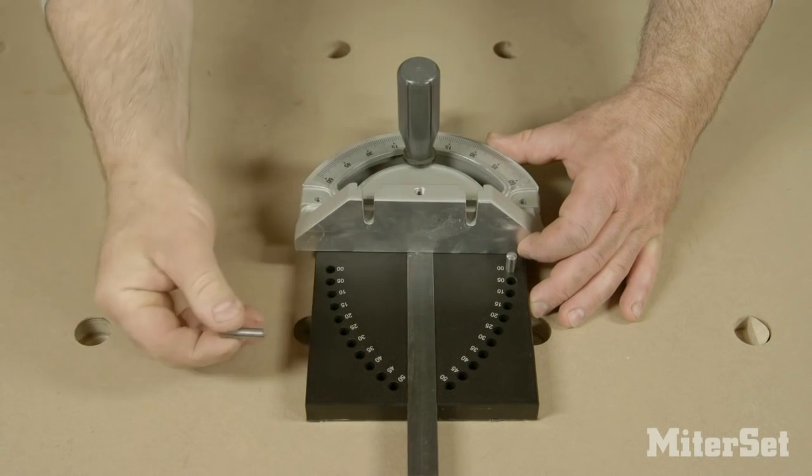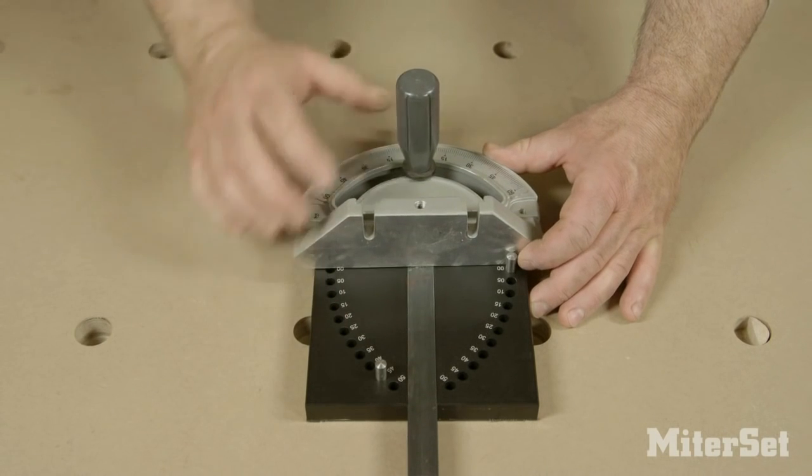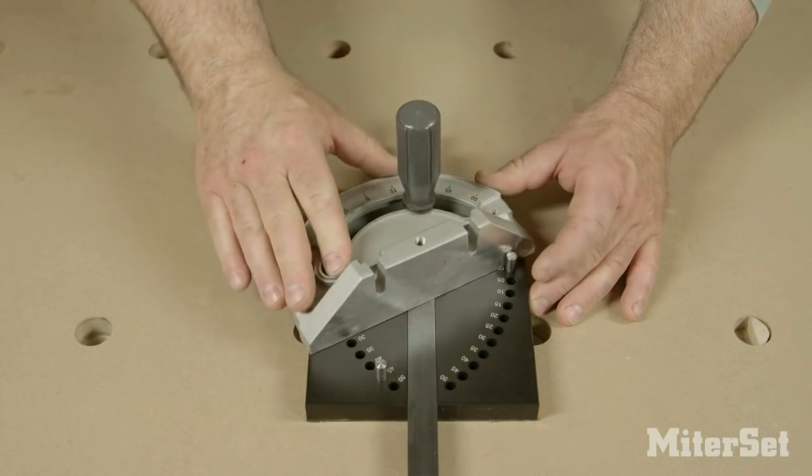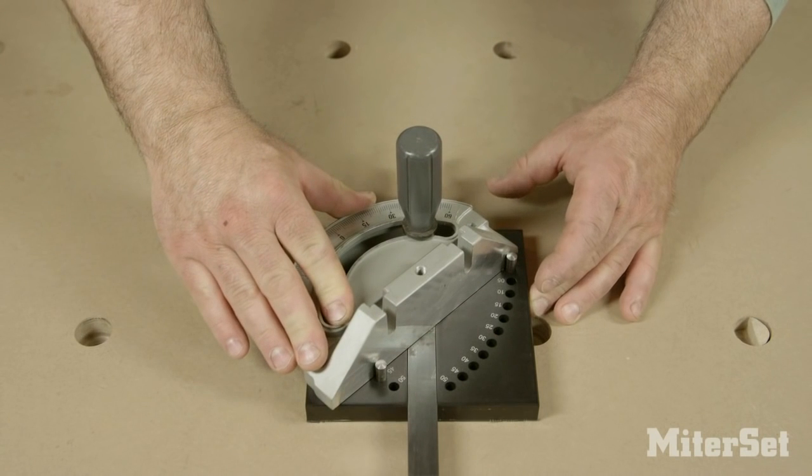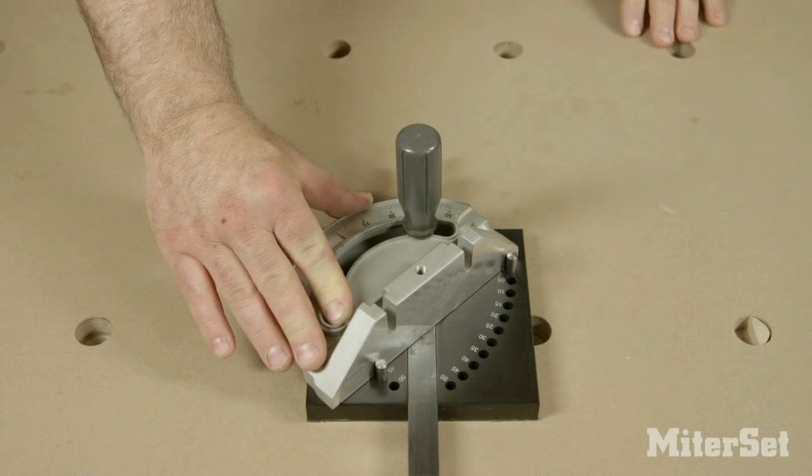Now let's say I wanted to set 45 degrees. I just take one of the pins and put it in the sector for a left-hand cut, then move the face of the gauge up and lock it down, and now I have a perfect 45-degree angle.